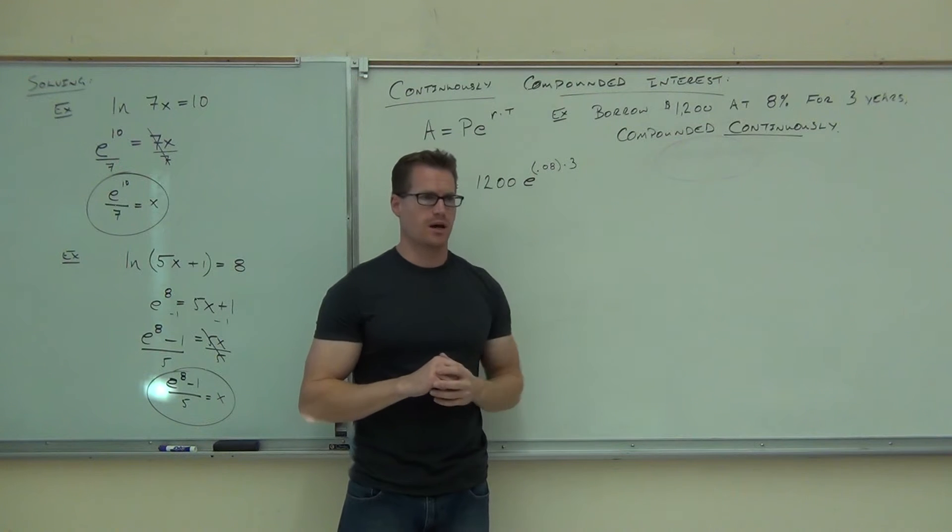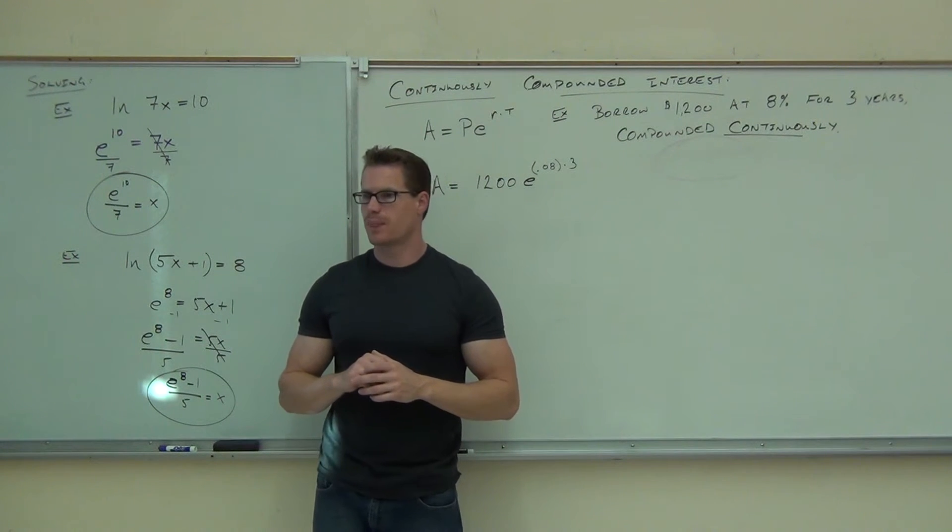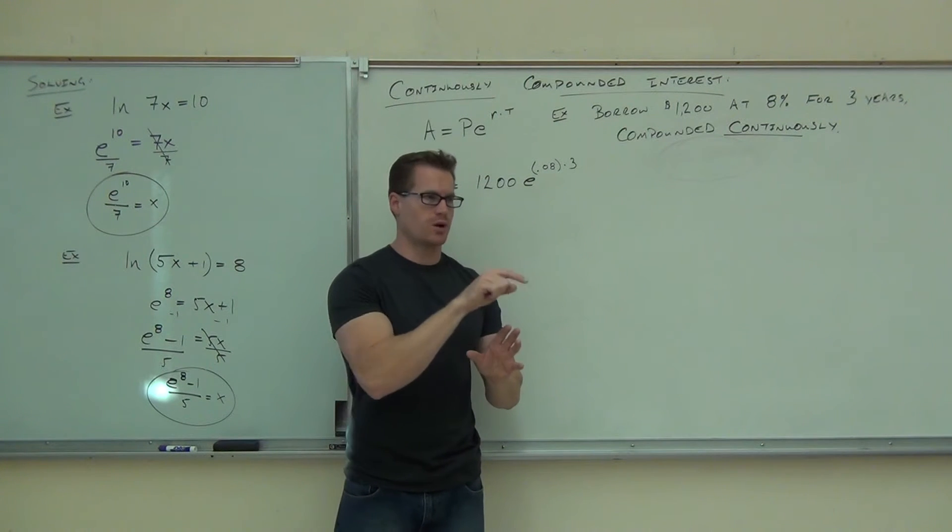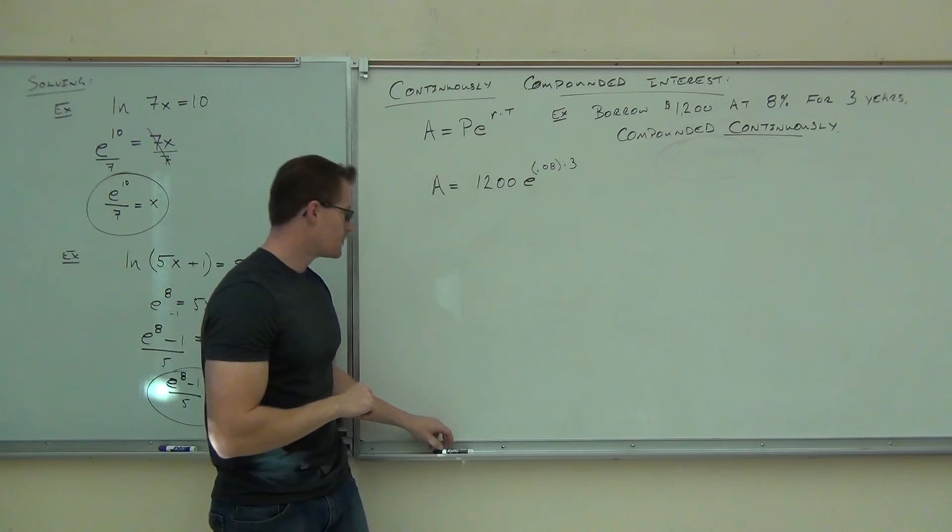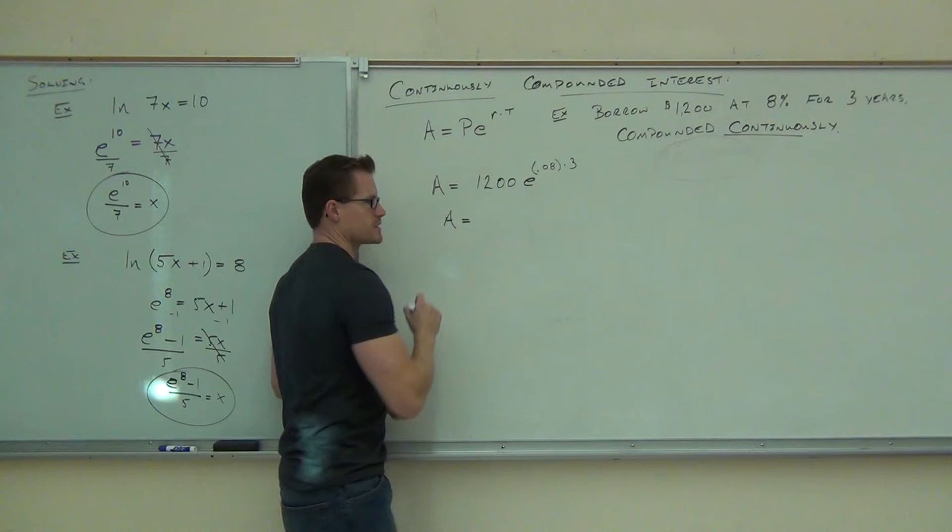In either case, you press enter right now, and you'll probably get one point something. Right? Now, leave that on the screen. Without rounding it, multiply it by 1,200.